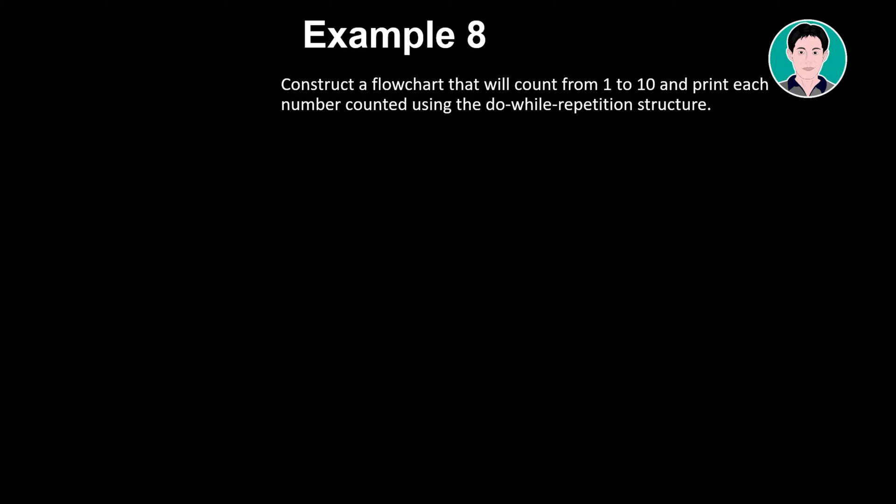Example 8. Construct a flow chart that will count from 1 to 10 and print each number counted using the do-while repetition structure. Write its equivalent algorithm.